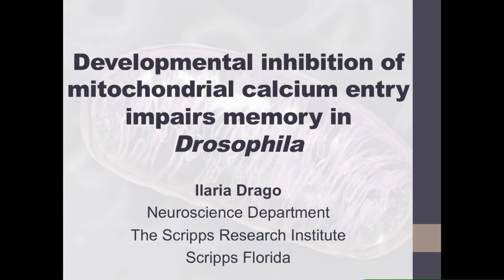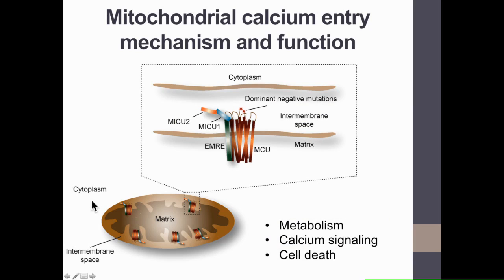Whenever there is an increase in cytoplasmic calcium, this second messenger enters the mitochondrial matrix, and this phenomenon is known to regulate, among many other cellular functions, metabolism, overall cellular calcium signaling, and cell death.